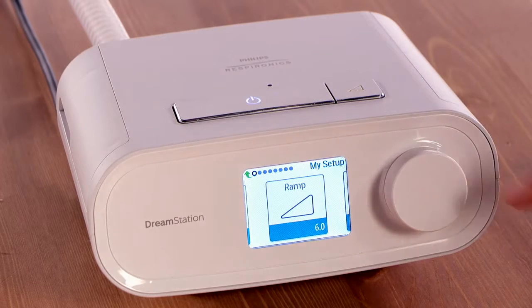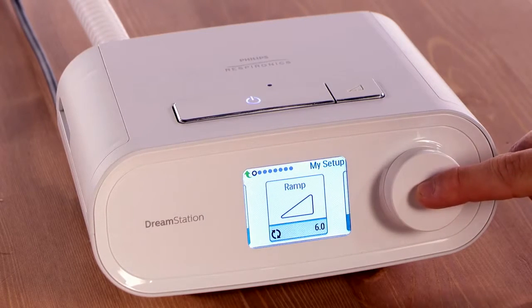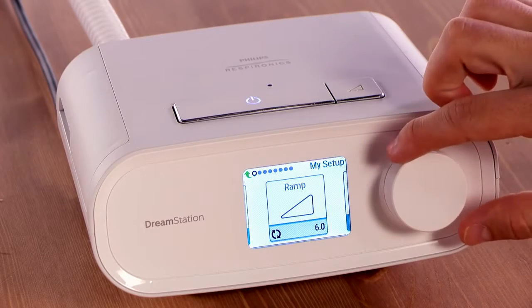Press down on the dial to select the ramp symbol. If you don't see the symbol, ramp is not enabled on your device.